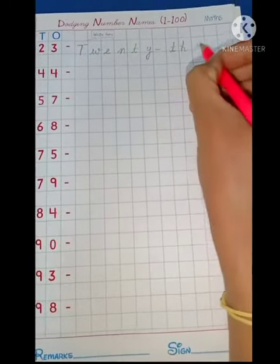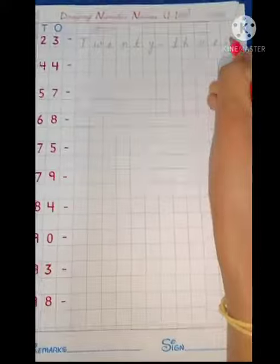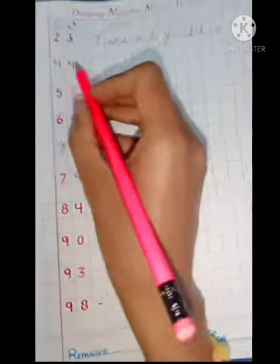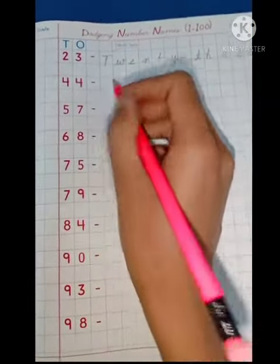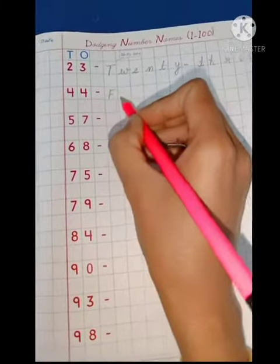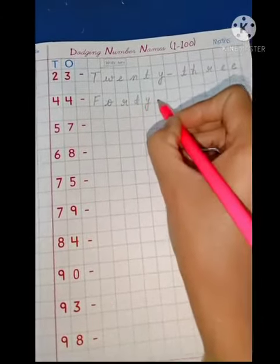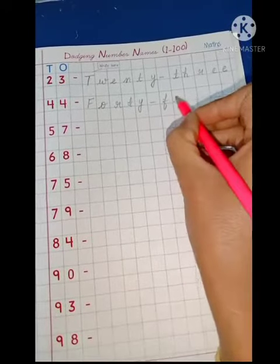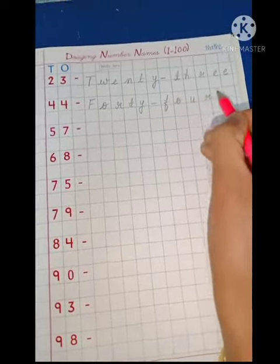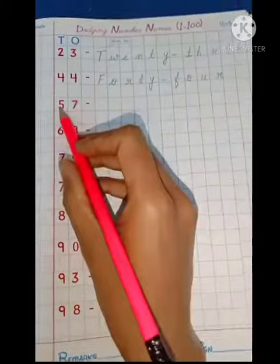Next is 44: F-O-R-T-Y, forty, dash, F-O-U-R, forty-four.